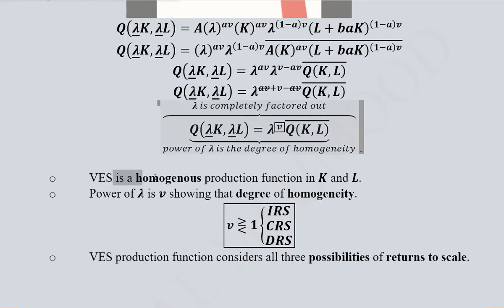Consequently, VES is a homogeneous production function in terms of capital and labor, the two variables where we introduced the scalar lambda. The power can be any value: equal to one, greater than one, or less than one. Greater than one implies increasing returns to scale (IRS), less than one means decreasing returns to scale (DRS), and equal to one implies constant returns to scale (CRS).